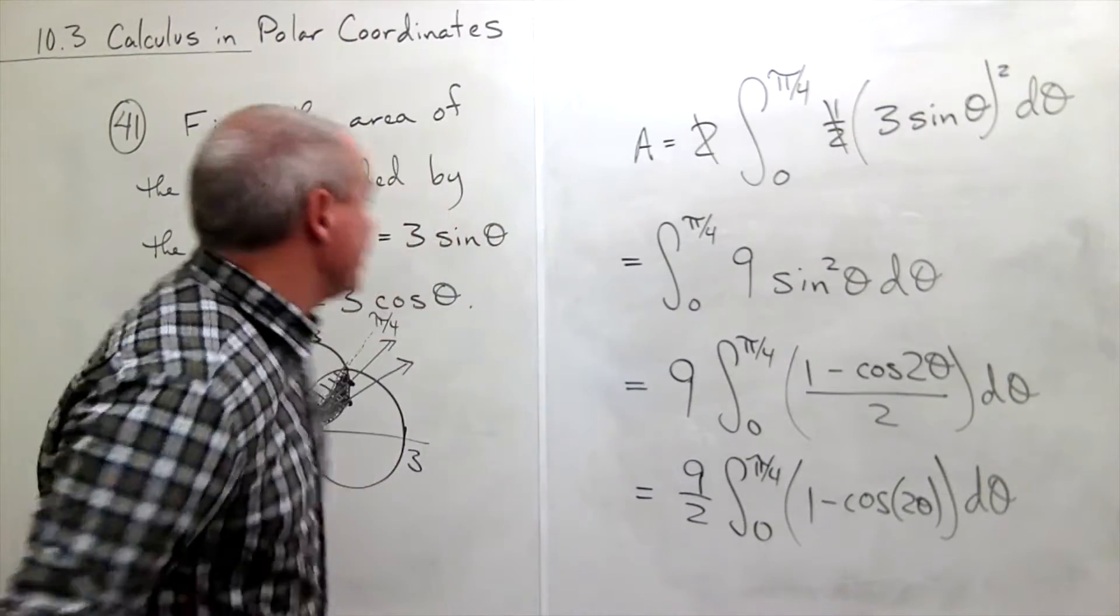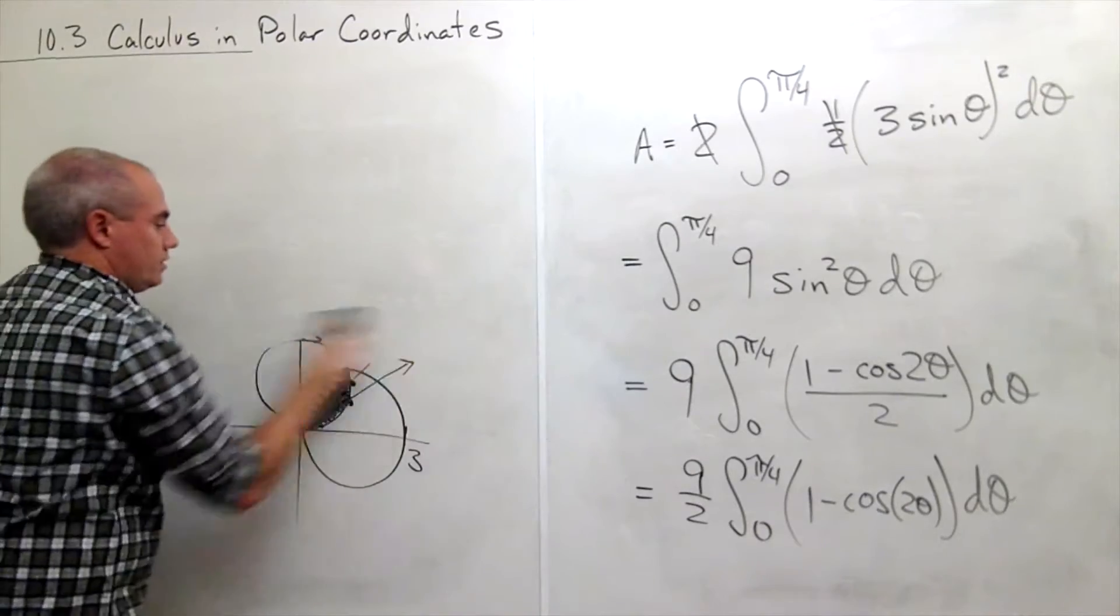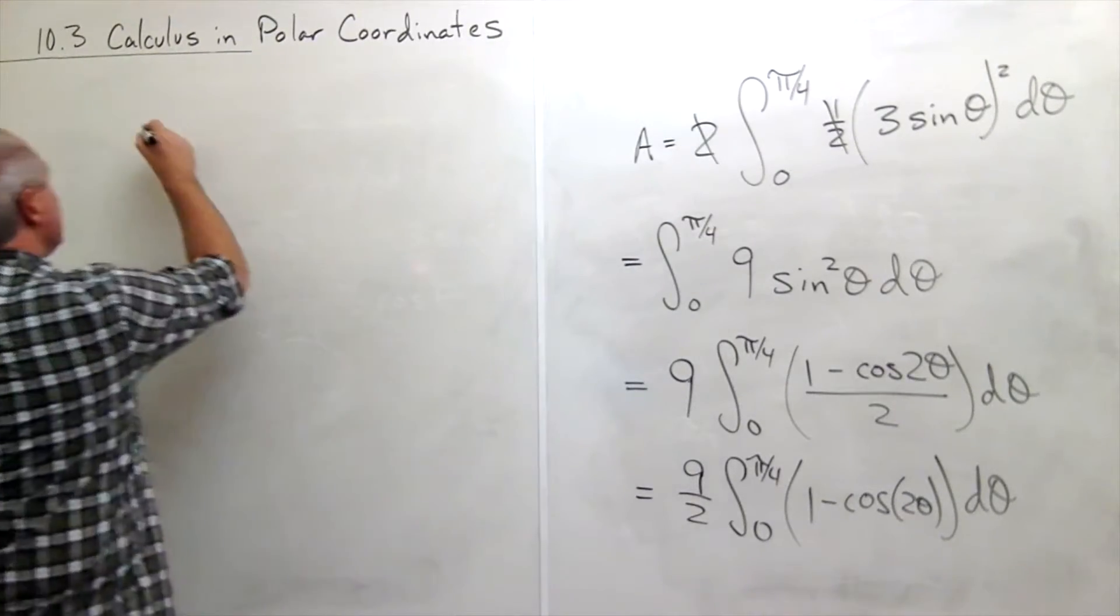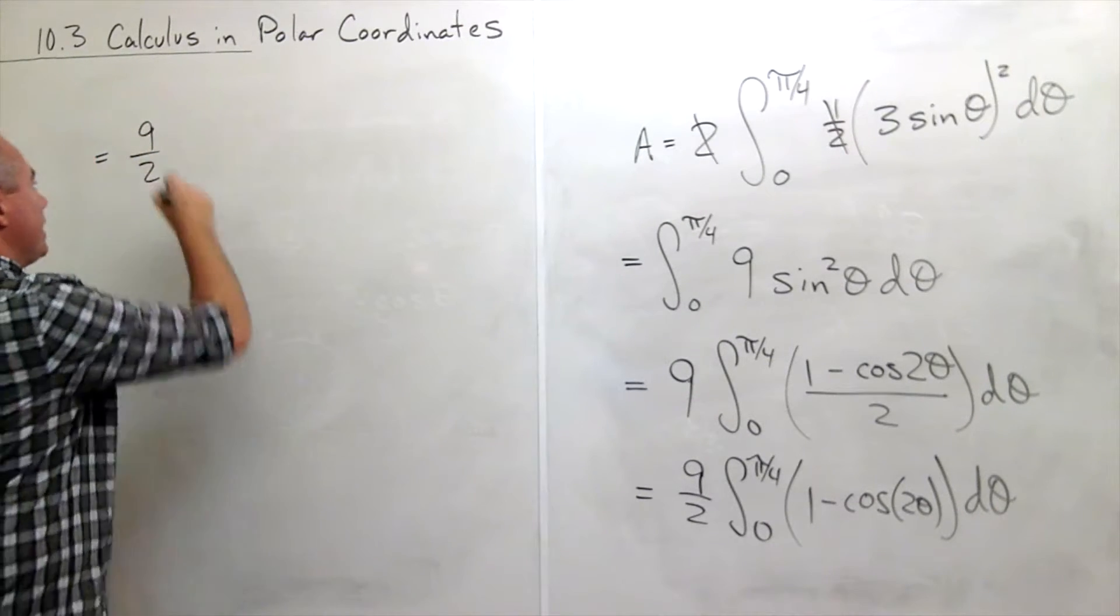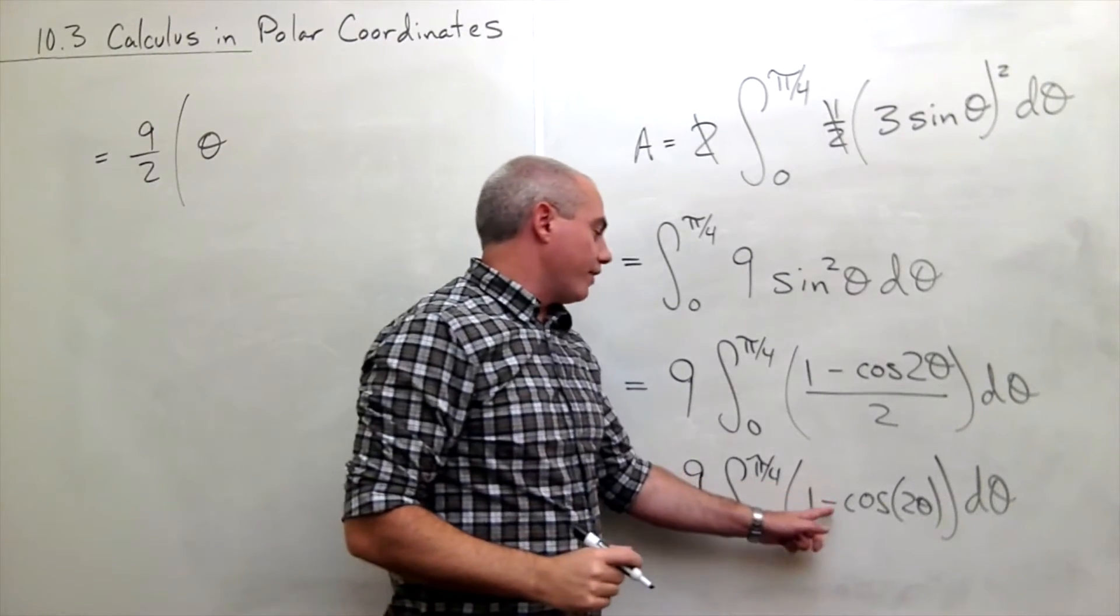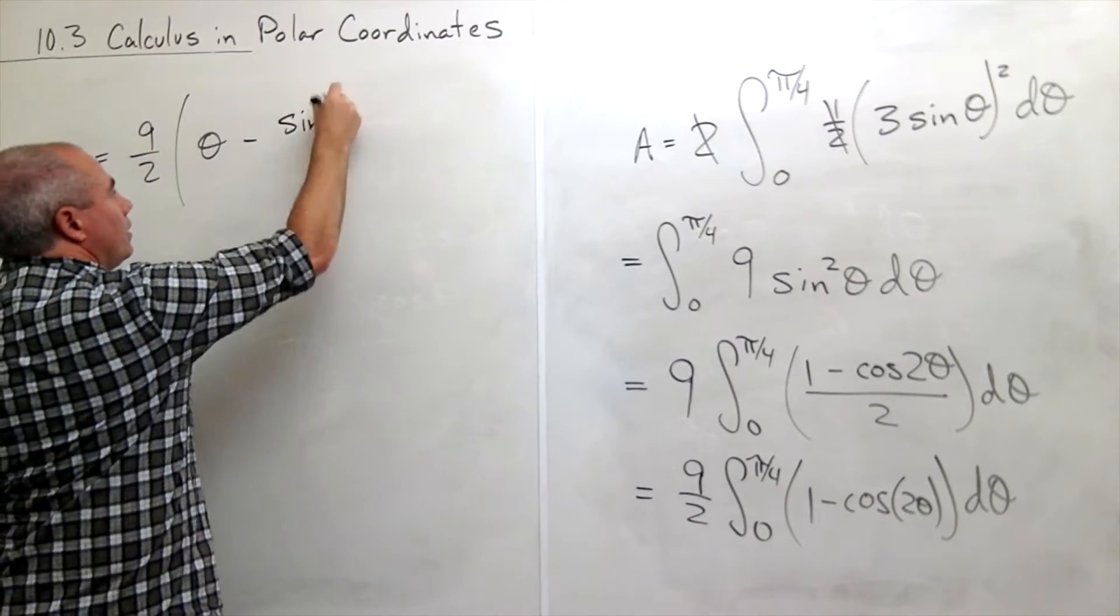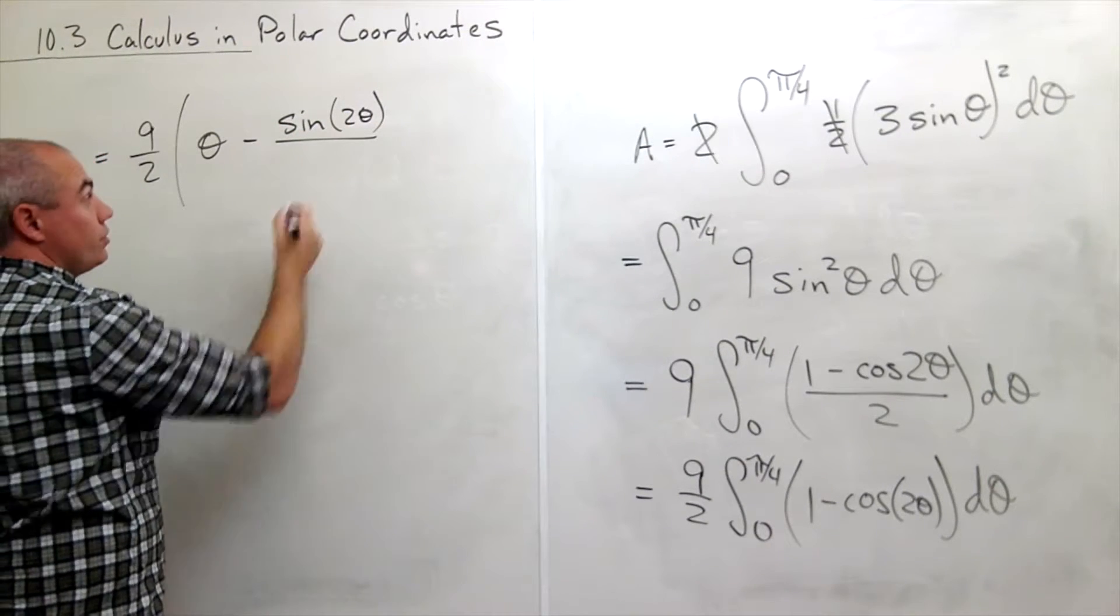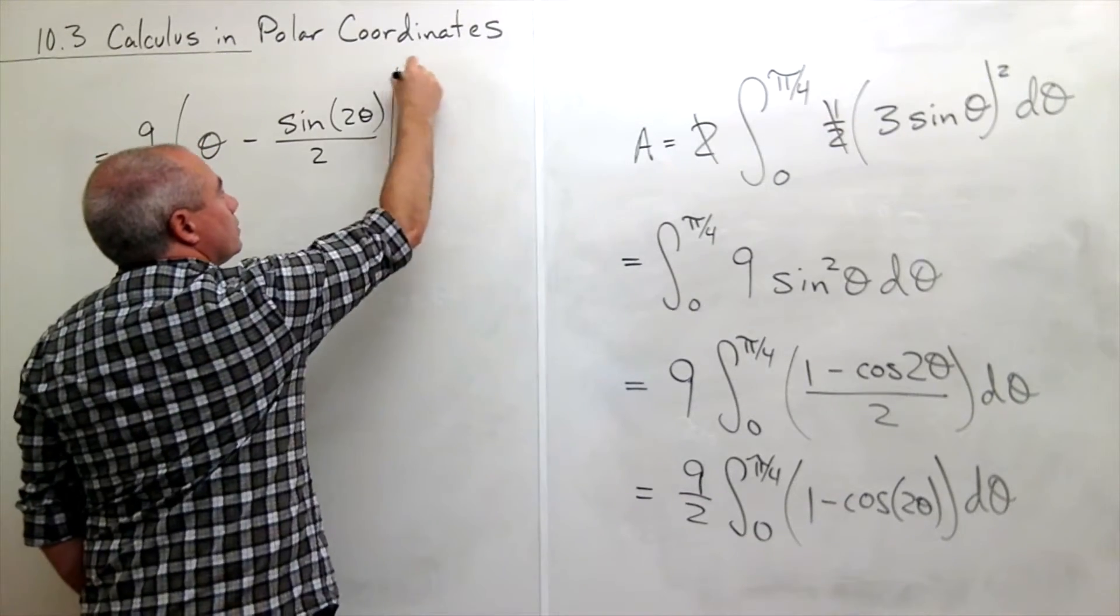Now we're ready to take an antiderivative. So let's move over to this side. So I have nine halves. And then I take an antiderivative of one and I get theta. I take an antiderivative of negative cosine of two theta and I get negative sine of two theta over two evaluated from zero to pi over four.